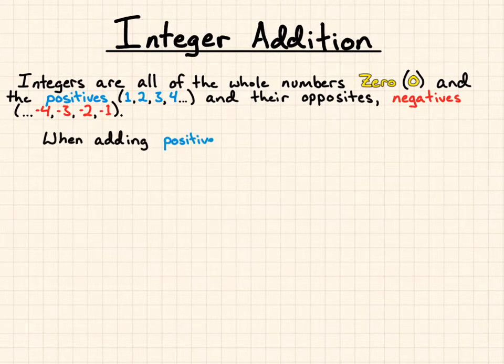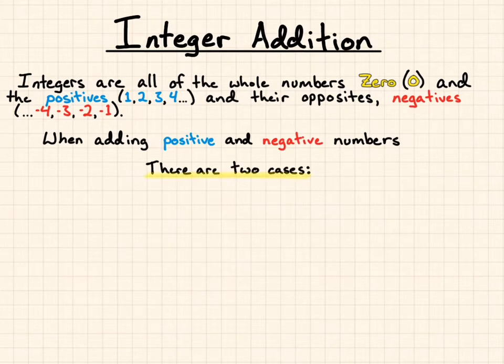When adding positive and negative numbers, you got to think about two cases. I describe it as a party or a war.